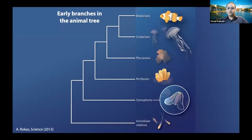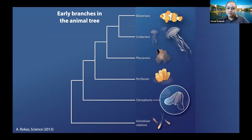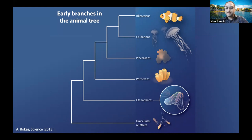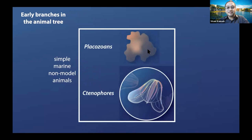Another way of classifying animals is to look at the early branches in the animal tree of life. Unicellular relatives gave rise to the first animals, and these are the earliest divergent animal systems. As you go towards the top, you're increasing in complexity, going all the way to placozoans, cnidarians or jellyfish. Bilatarians include us. My interest is really in these simple marine non-model animal systems — particularly during my postdoc I focused on placozoans, and in the future I'll focus on ctenophores.